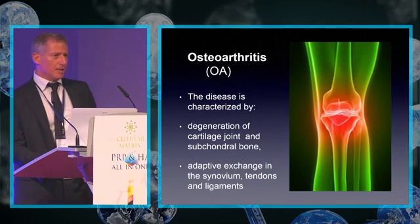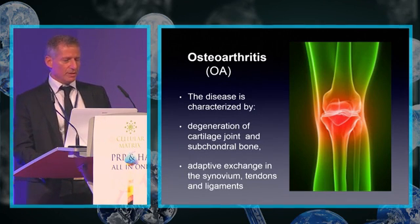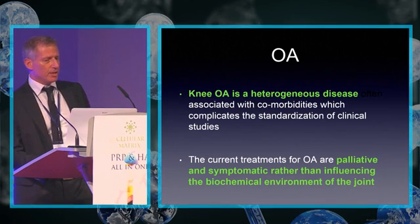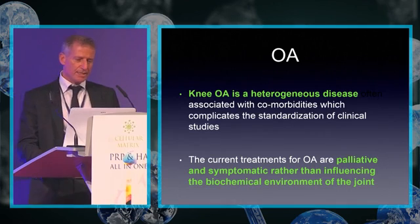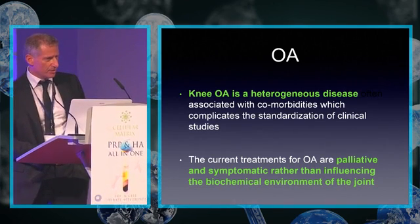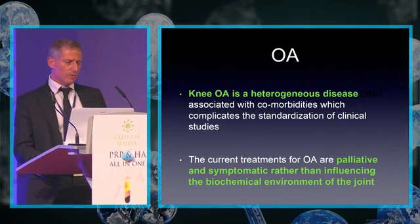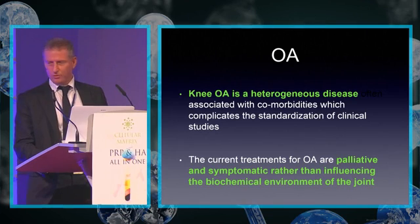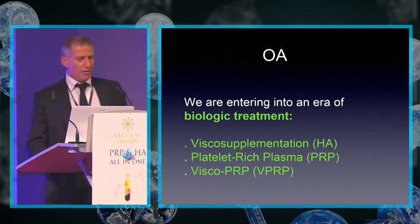The disease is characterized by a degeneration of cartilage, joint and subchondral bone, with adaptive changes in the synovial ligaments and tendons. Knee osteoarthritis is a heterogeneous disease associated with comorbidities, which complicates the standardization of clinical studies. The current treatments for OA are palliative and symptomatic rather than influencing the biochemical environment of the joint. We are entering into an era of biological treatment.